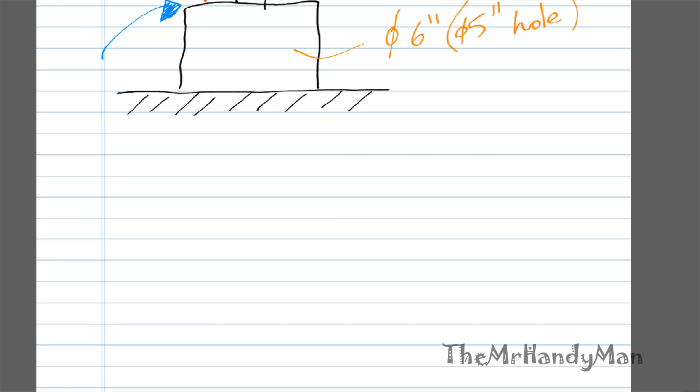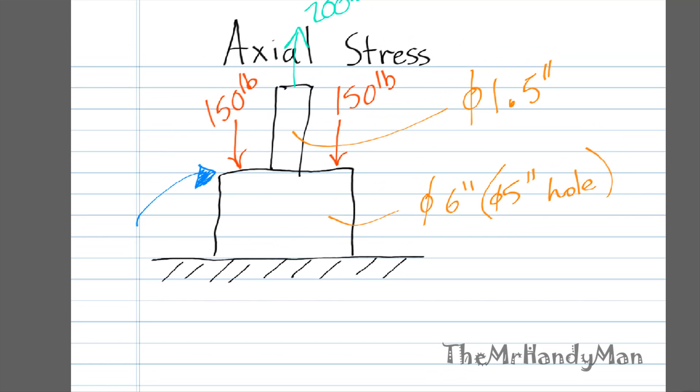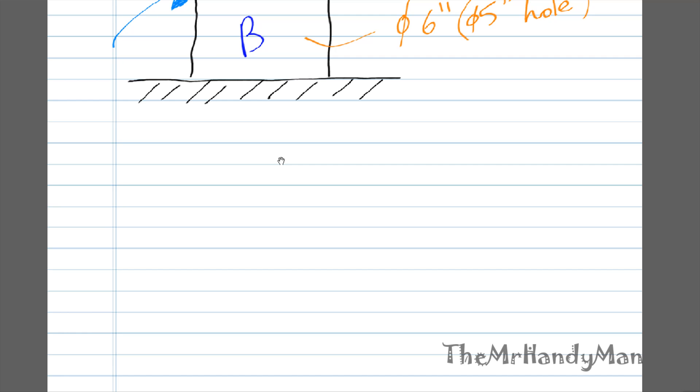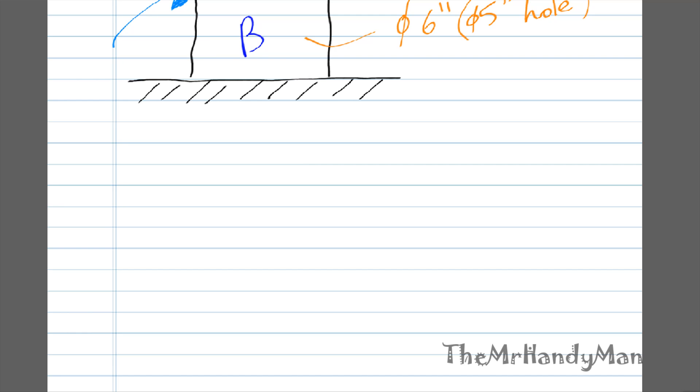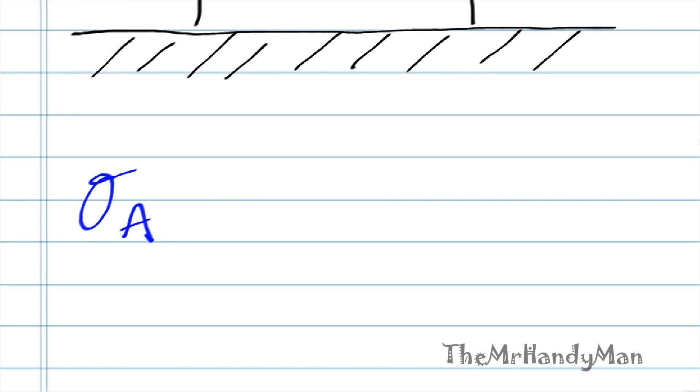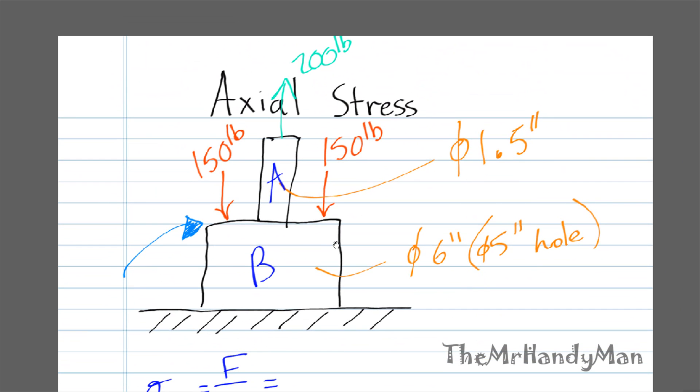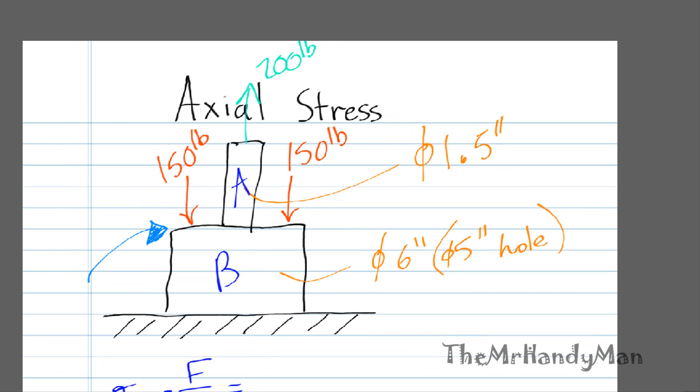So if I were to label these in two different sections here, I would say that the top one, just name it A and this one B. Well, if we were to calculate for the stress at A, we would need both force and area. We'll realize that within A's section, the only force that's being applied is going to be this 200 pounds, which is at the end.